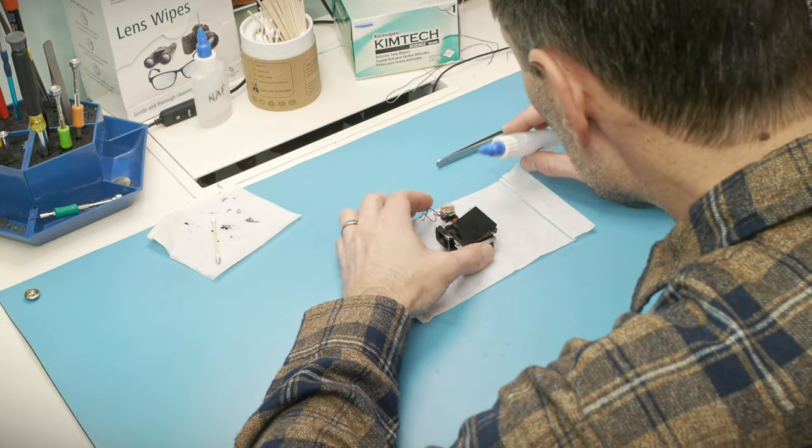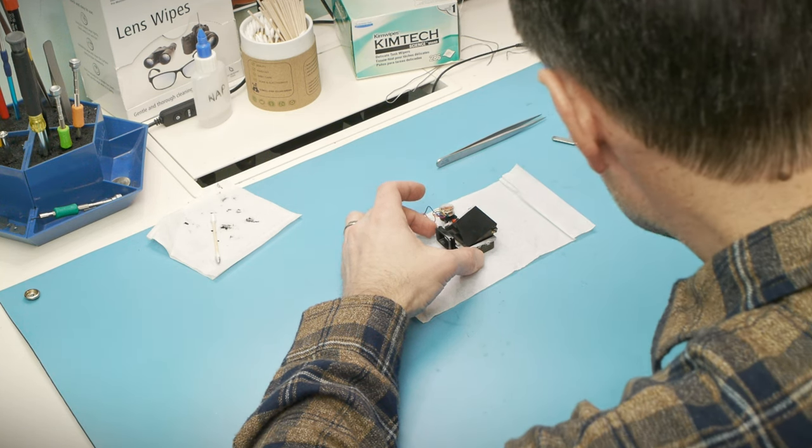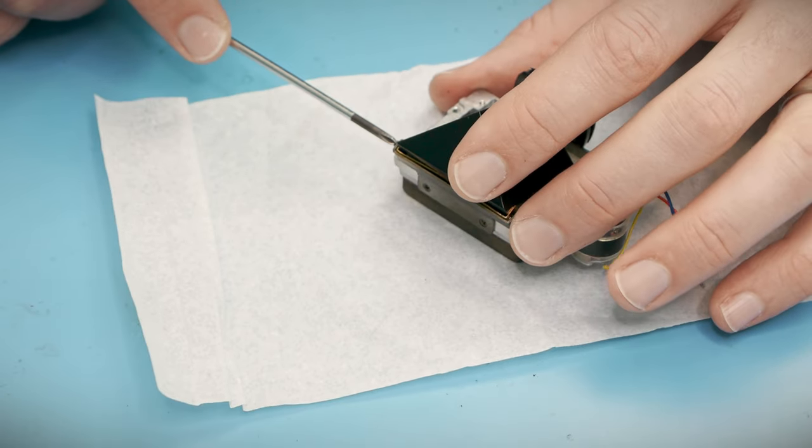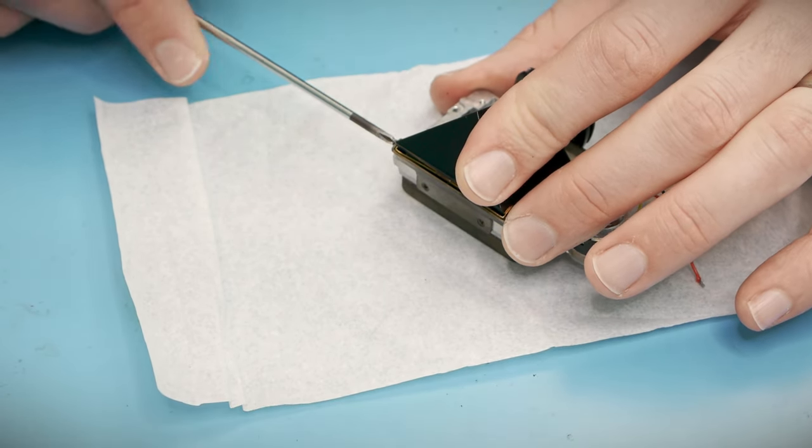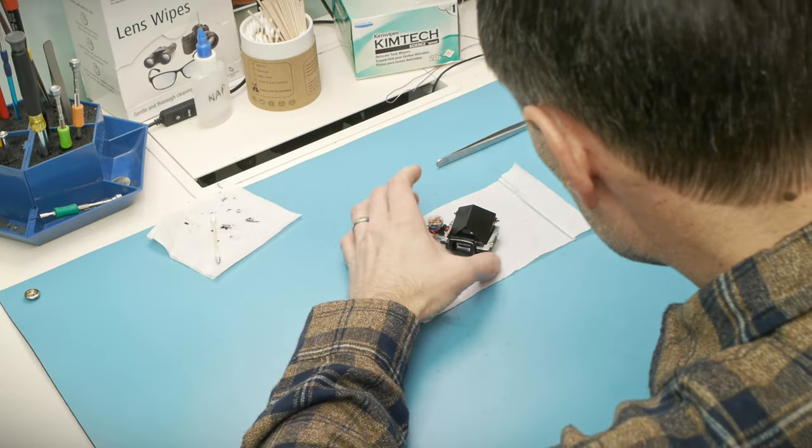I'm going to put a couple drops of isopropyl alcohol on the galvanometer screws and start softening up that lacquer. While that is working, I can remove the pentaprism. It's held in place by two screws on either side of this brass bracket, but it's best to only loosen one of them.